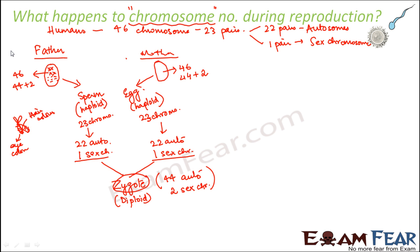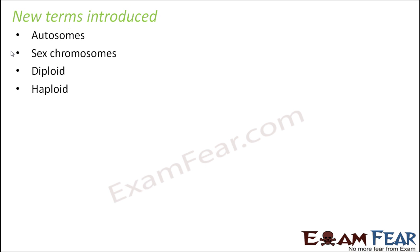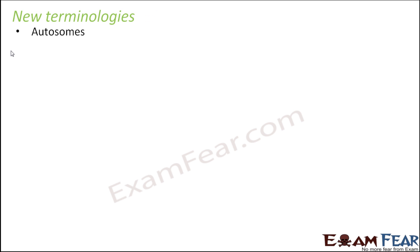This recap helps you relate how reproduction happens and where heredity plays a role in that process. Some terms may not be entirely new since they were introduced in Class 10, but let me quickly recap them because I'll be using these terms quite often in the lecture on genetics: autosomes, sex chromosomes, diploid, and haploid.